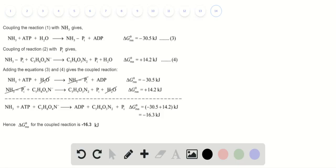Coupling the reactions, the final reaction is NH₃ + ATP + C₅H₈O₄ → ADP + product. In this case, ΔG for the reaction is -16.3 kJ, from which we must determine the equilibrium constant.